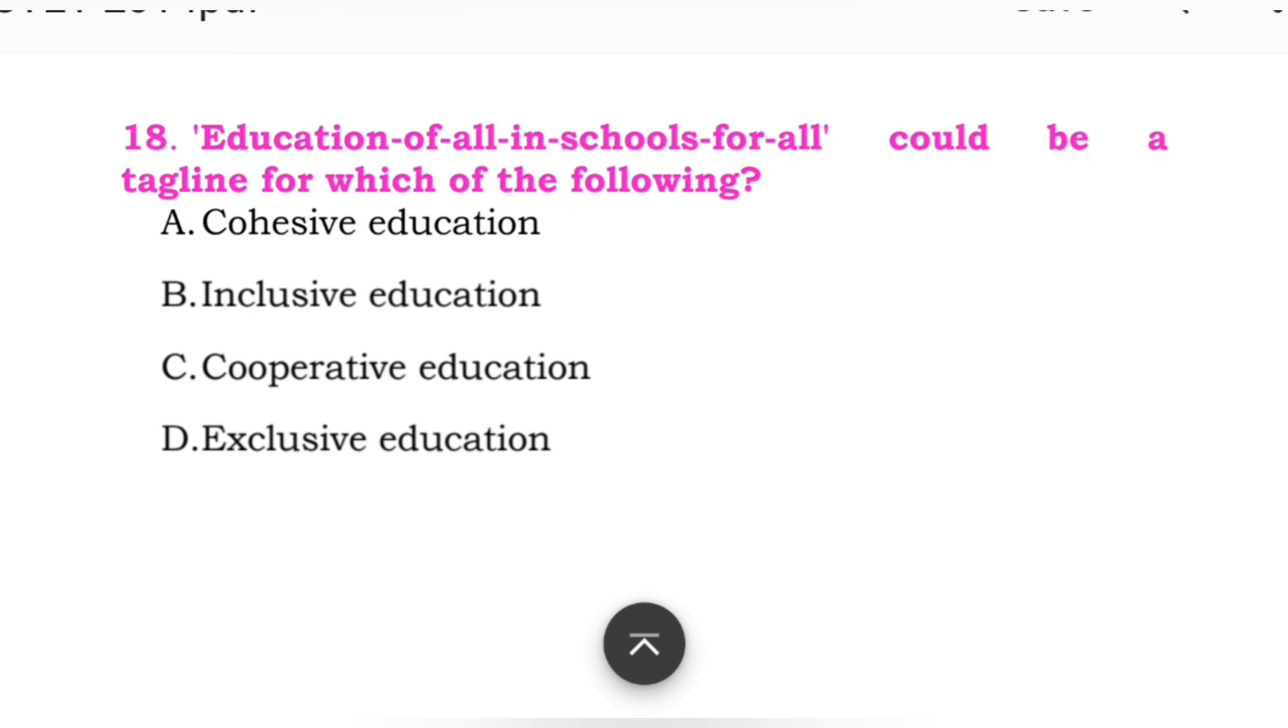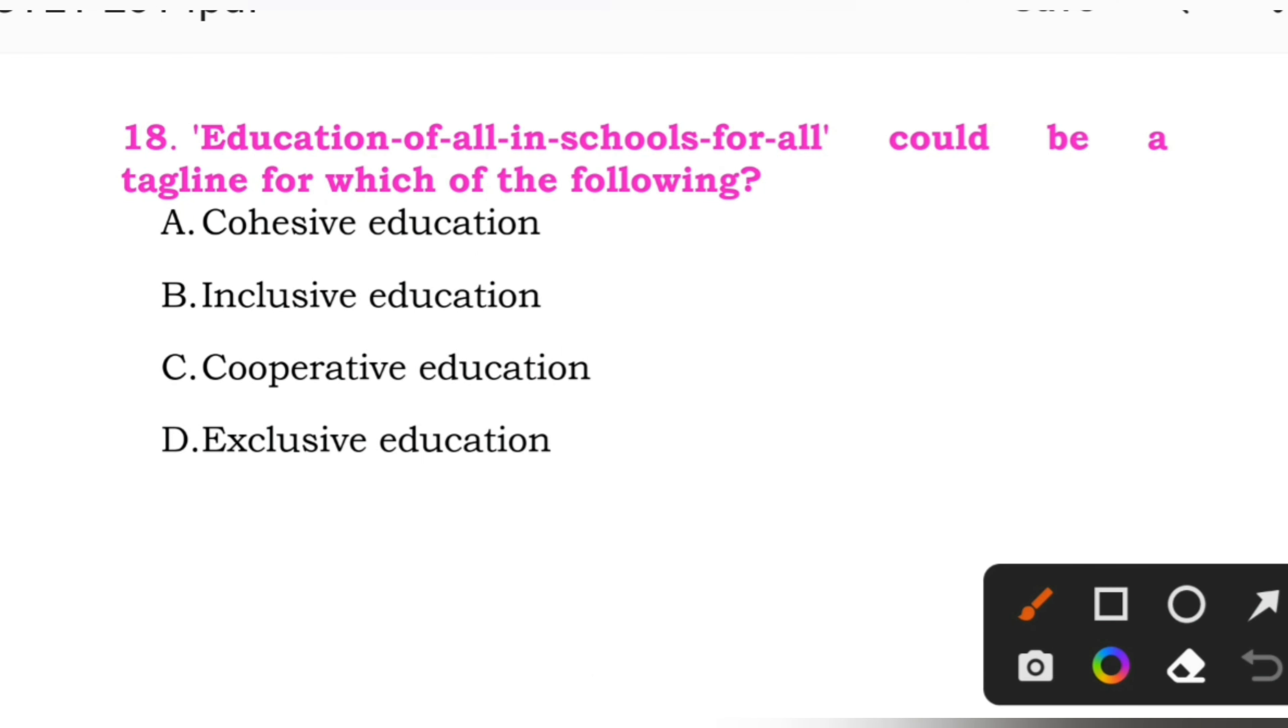Question number 18: Education of all in schools for all could be a tagline for which of the following? Options: A: cohesive education. B: inclusive education. C: cooperative education. D: exclusive education. So here the right answer is B, inclusive education.